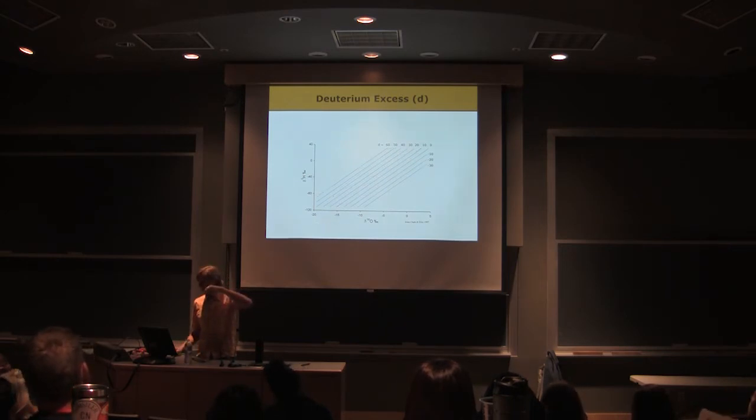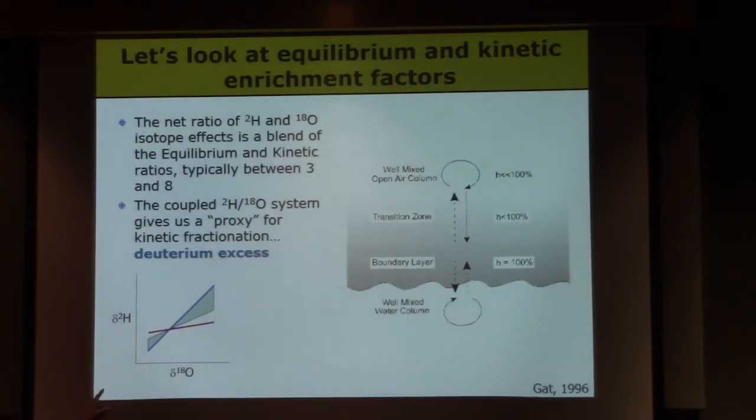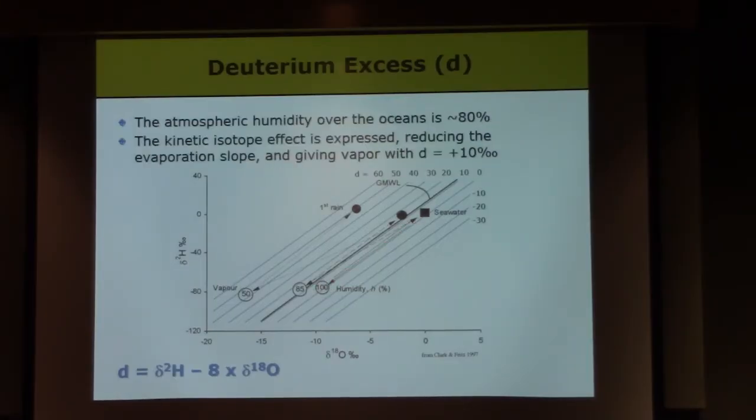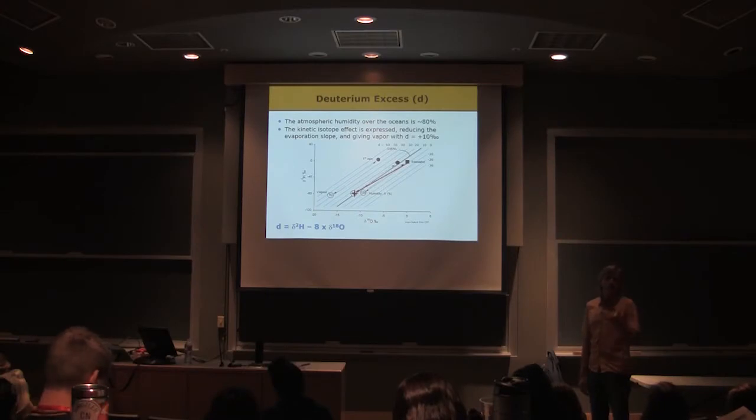It lies here in this shaded zone. And so as we take seawater and we evaporate from it into the real atmosphere, we follow that red line there. And we end up producing a vapor that has a higher deuterium excess.